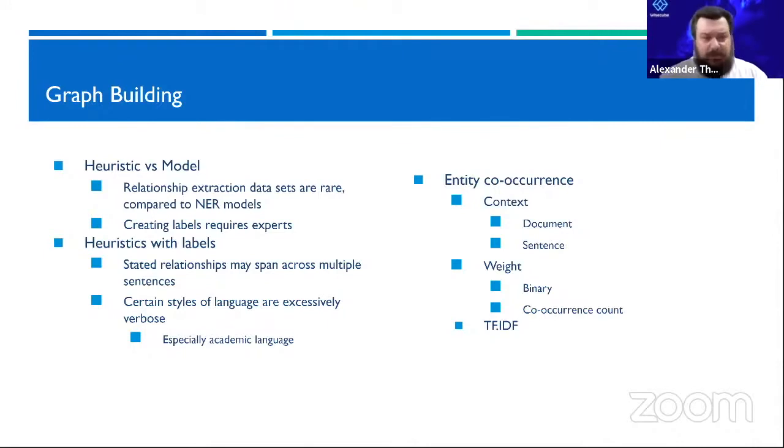Different styles of language can make this very difficult. If you have very verbose language, like academic language, the way the relationships are stated can span sentences. It'll be hard to come up with heuristics that extract different kinds of relationships.